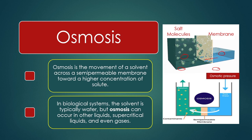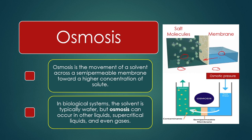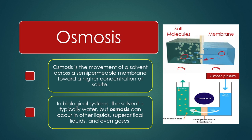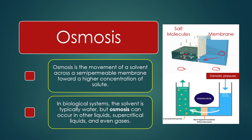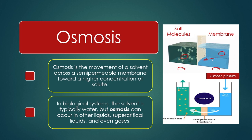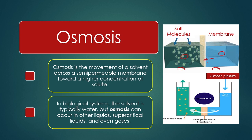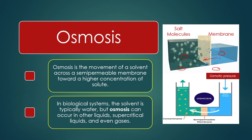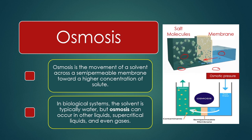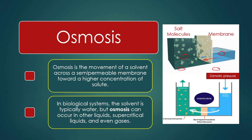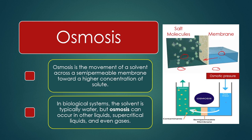The solvent moves from the lower concentration to the higher concentration solution. This transport of solvent from lower to higher concentration is called osmosis. In biological systems the solvent is typically water, but osmosis can occur in other liquids like supercritical liquids and even gases. The osmotic pressure is the driving force for this movement.